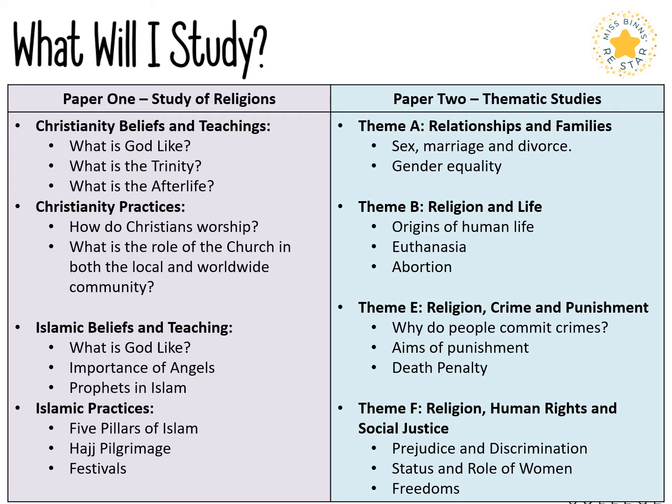In terms of what you will study, there are two papers. Paper one is the study of religions and paper two we look at different themes, so it's our thematic studies paper. For paper one, study of religions, we look at Christianity and Islam — two religions that we will focus on — following the same structure, looking at beliefs and teachings and practices within both Christianity and Islam.